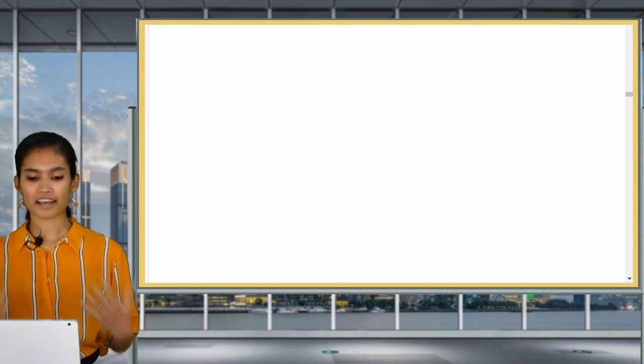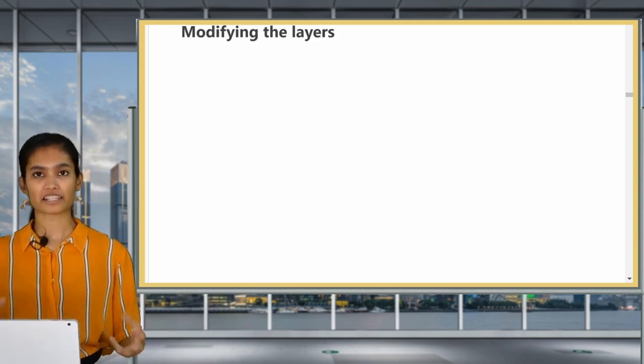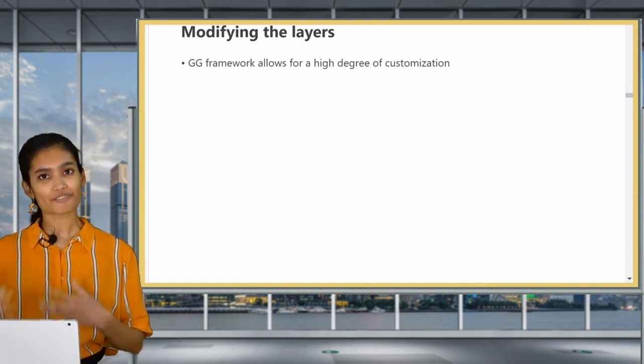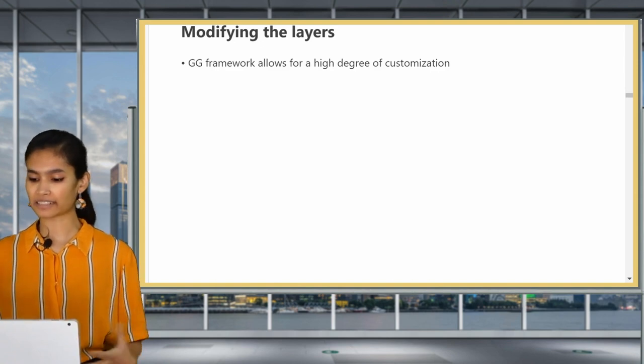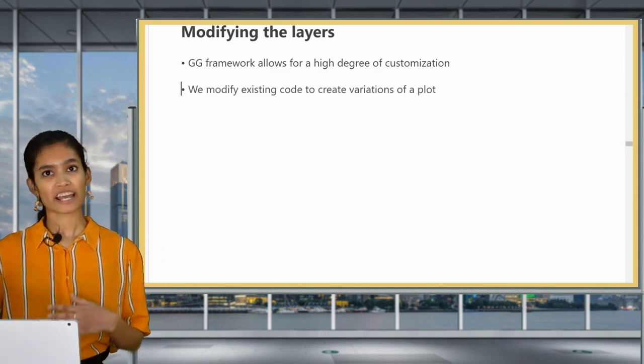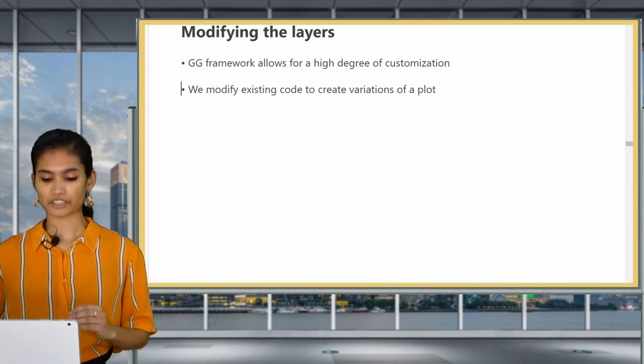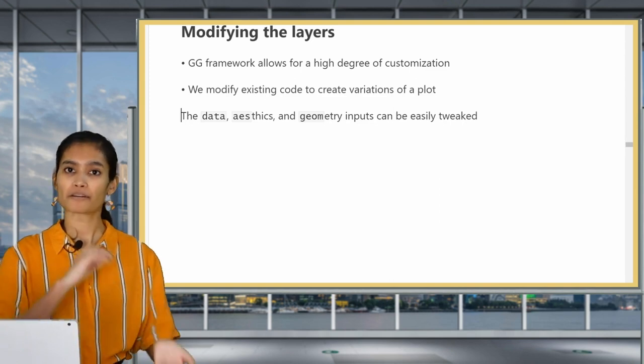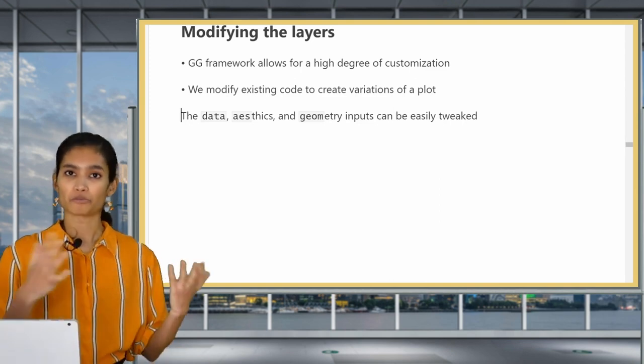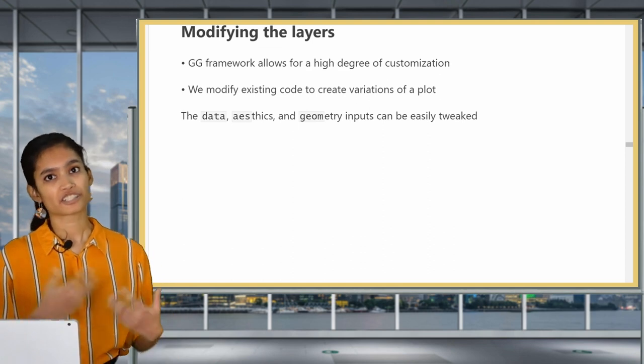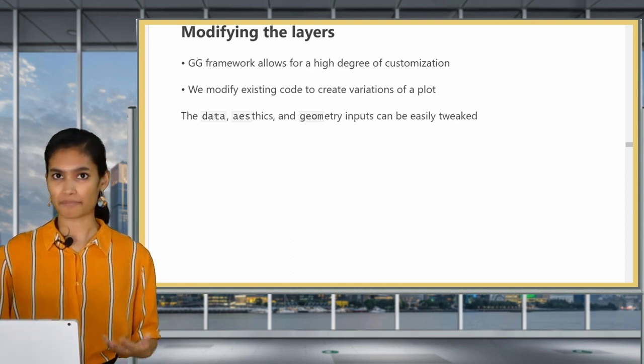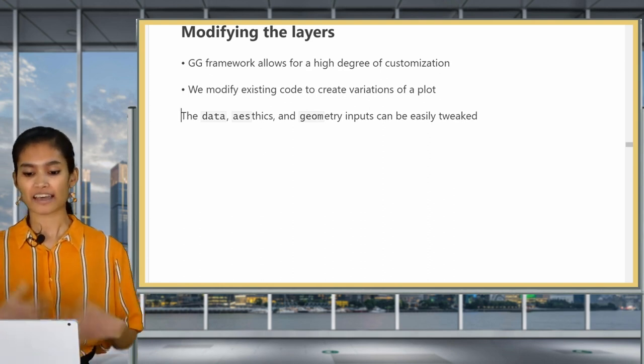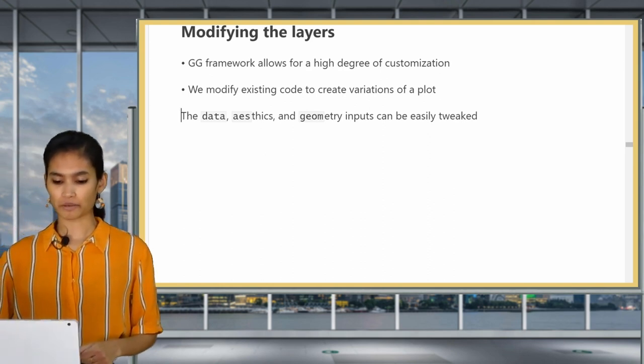What we've done so far is to just use the most basic arguments for our data aesthetics and geometries layer. But we can also modify things in each layer, even in just these three layers. Generally speaking, the grammar of graphics framework allows you to customize quite easily. We can tinker with our existing code to change the data aesthetics and geometries layer.